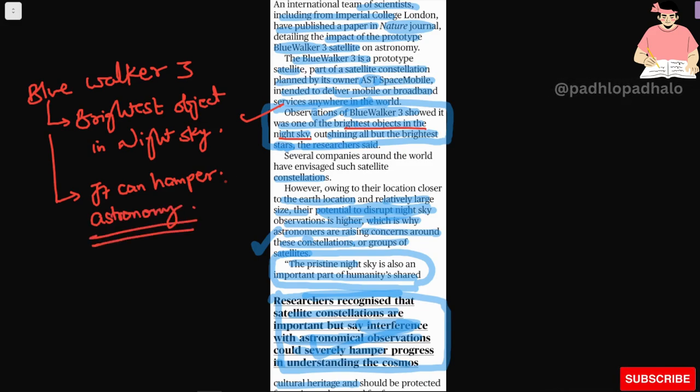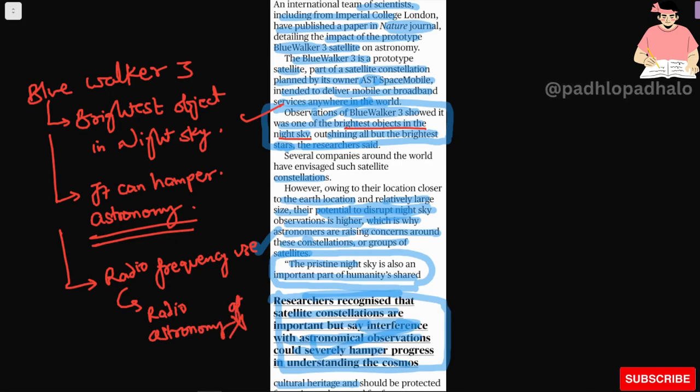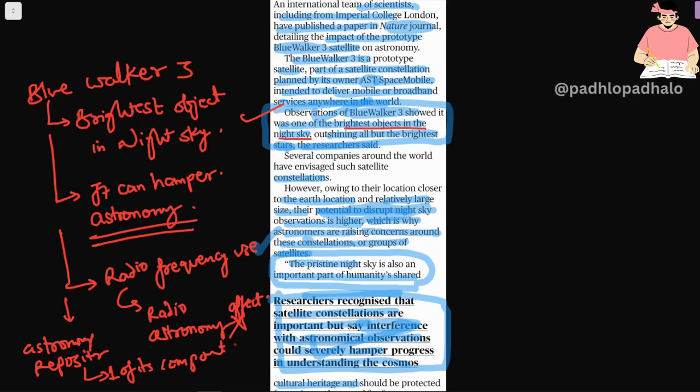It will affect astronomy because it is the brightest one shining there. It is using radio frequency, so what will happen is your radio astronomy will also be affected. One of its components includes astronomical repositories as well.